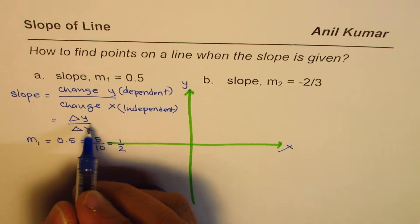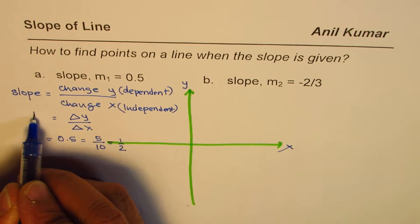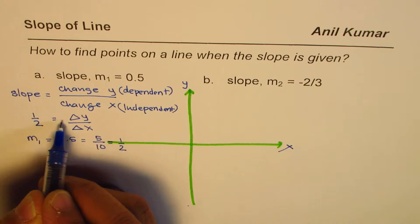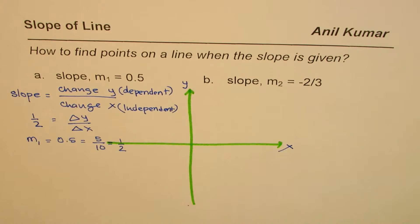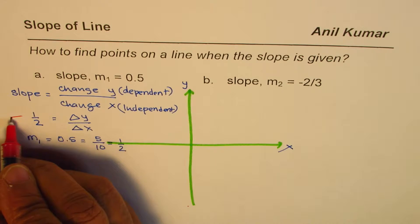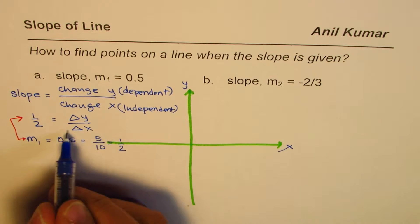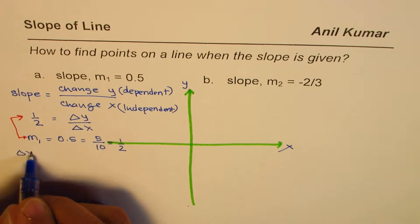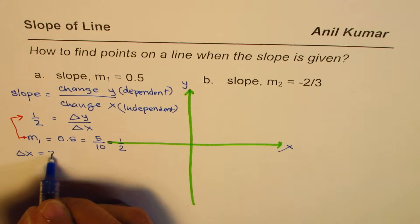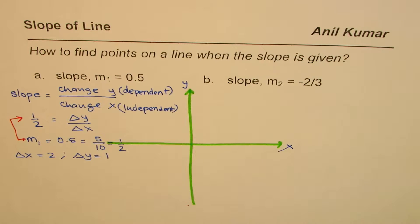When I say slope is one half, that means change in y over change in x equals one half — delta y over delta x equals one half. Connecting these two, you get that delta x, the change in x, equals 2 and change in y is 1.